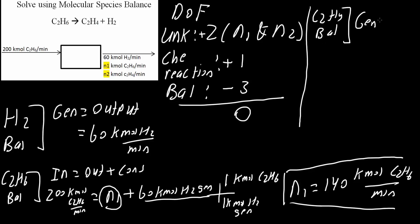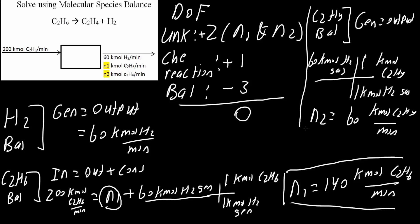We know that 60 kilomoles of H2 gas is being generated, and we know that 1 kilomole of H2 gas being generated would produce 1 kilomole of C2H4, because it's a one-to-one ratio. So that means N2 equals 60 kilomoles of C2H4 per minute, and that is the final answer.